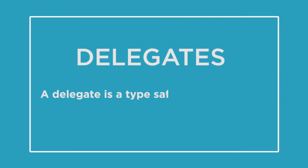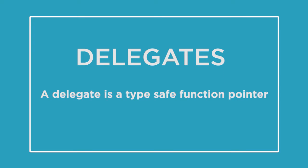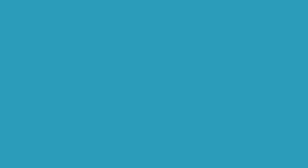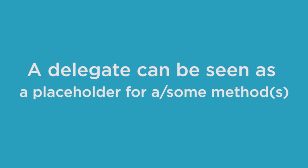A delegate is a type-safe function pointer. One good way of understanding delegates is by thinking of a delegate as something that gives a name to a method signature. A delegate can be seen as a placeholder for one or more than one method.